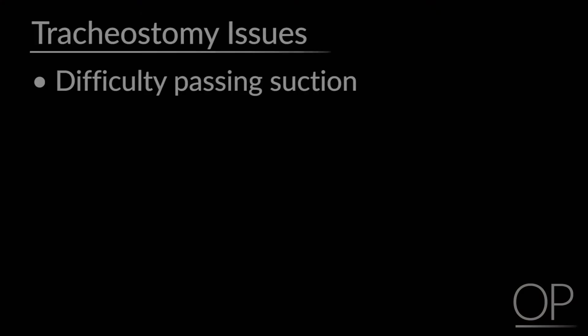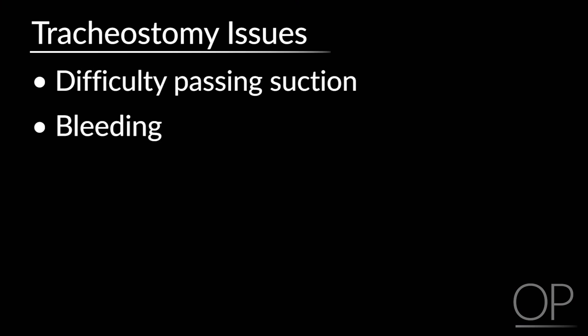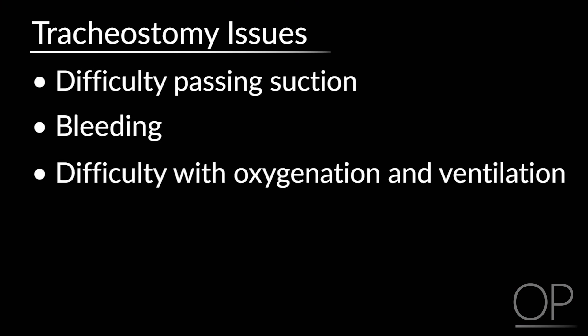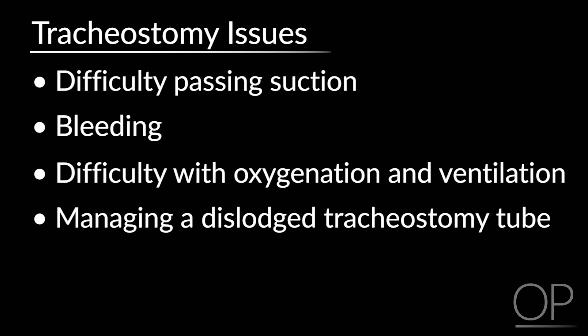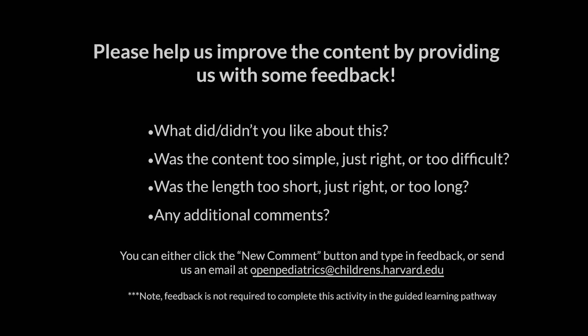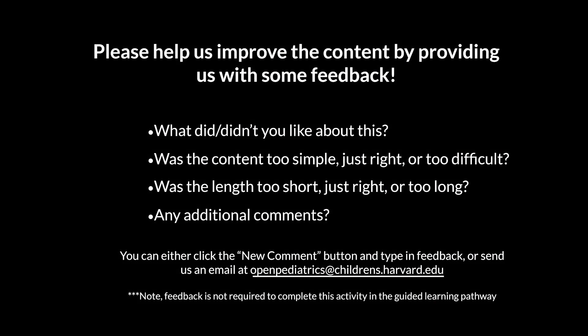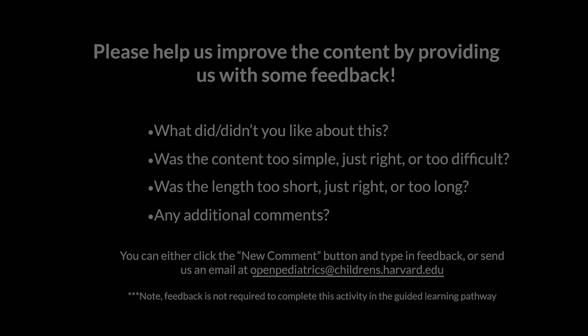This concludes our discussion on managing common tracheostomy issues. In this video, we discussed basic troubleshooting of issues including difficulty passing suction, bleeding, difficulty with oxygenation and ventilation, and managing a dislodged tracheostomy tube. Remember, airway issues should always be attended to urgently, and never be afraid to ask for help. Thank you for watching. Please help us improve the content by providing us with some feedback.